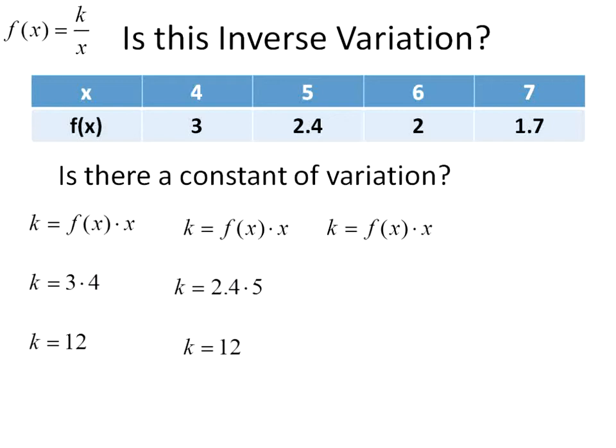And my next column, I have my function of x equal to 2. My x value is 6. 2 times 6 equals 12. So it's looking good so far. But I'm not going to quit at this point. I'm going to go ahead and check my final column as well. My function of x value times my x value, 1.7 times 7 gives me 11.9. Ooh. See that? So it's a good thing I checked that final column.